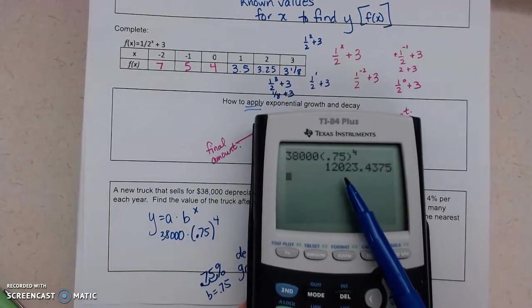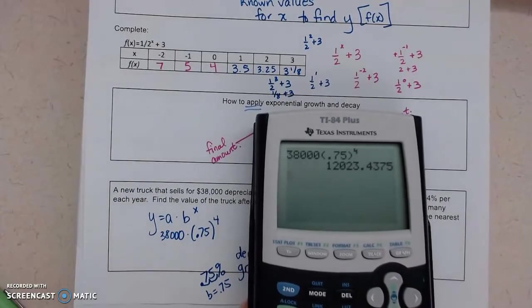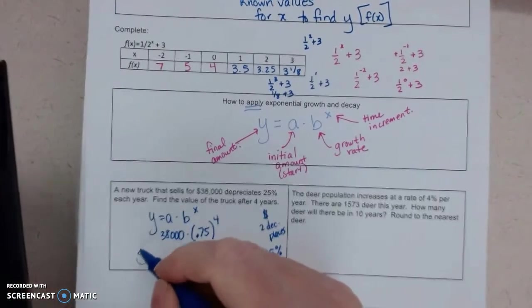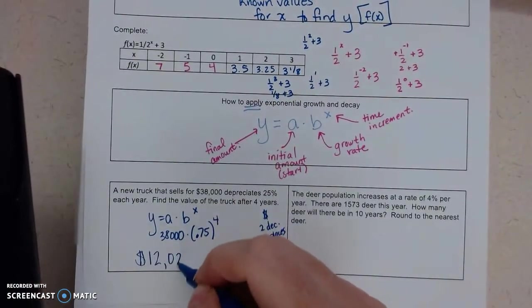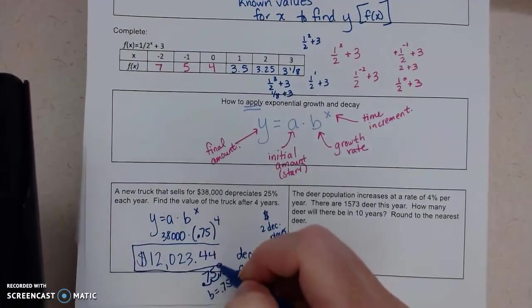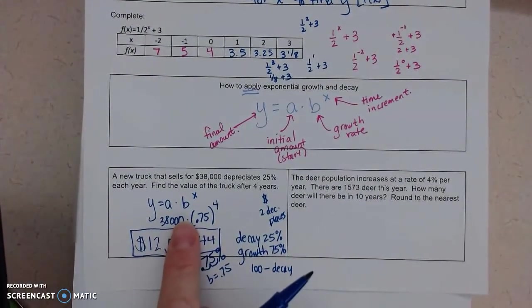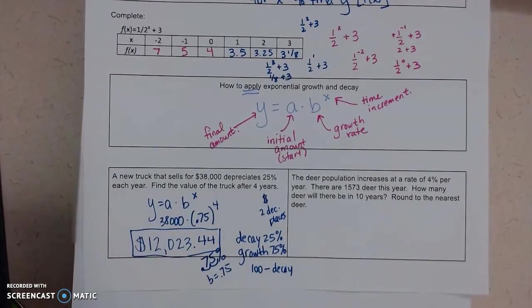So, it's worth $12,023.44. When you're showing your work, show at least the formula, and then show your answer to the appropriate increment.